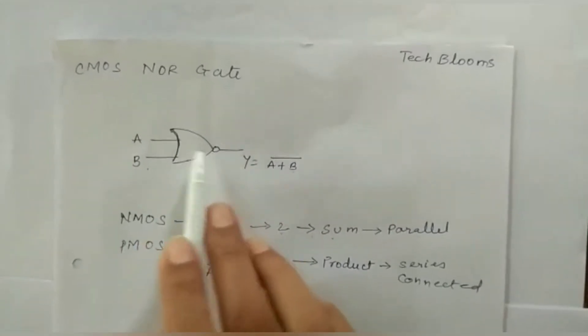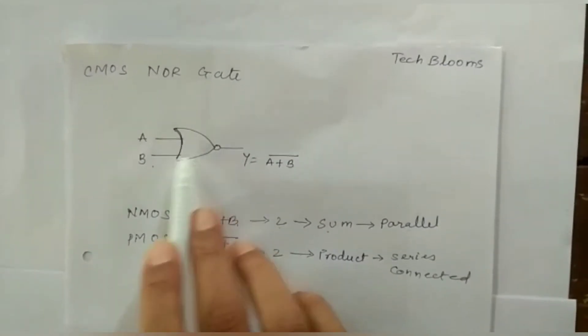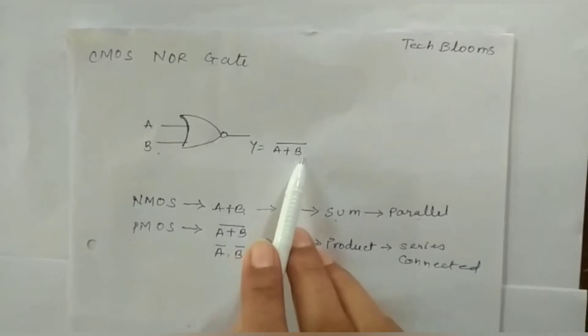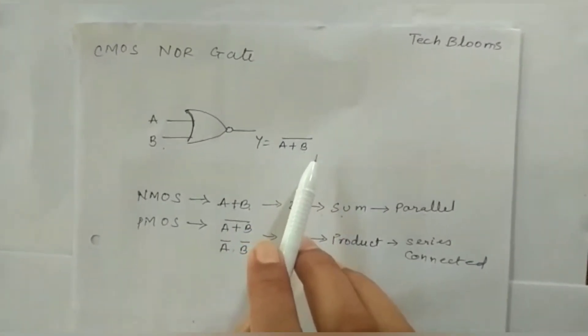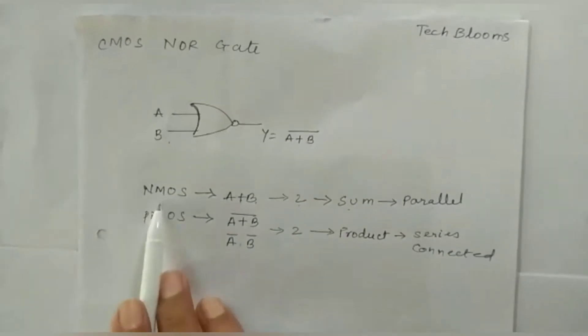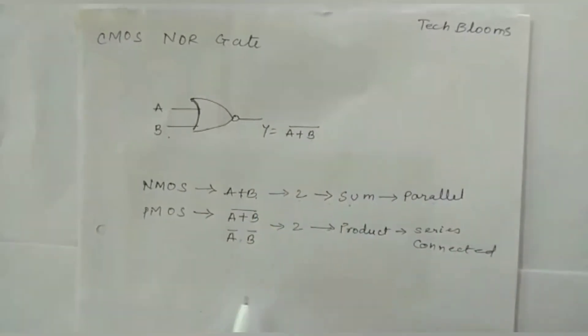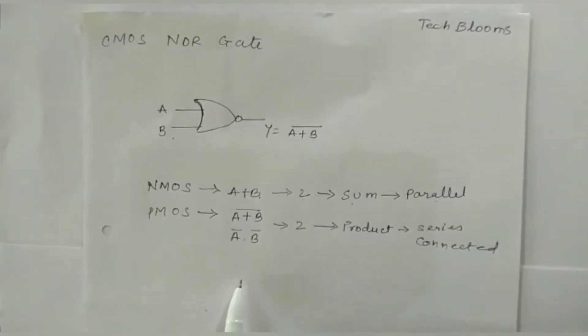Here we have a NOR gate where A and B is the input and Y equal to A plus B bar is the output of the NOR gate. From this expression we are going to draw a CMOS NOR gate.